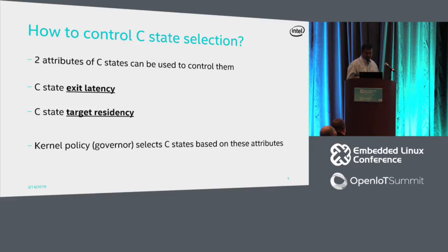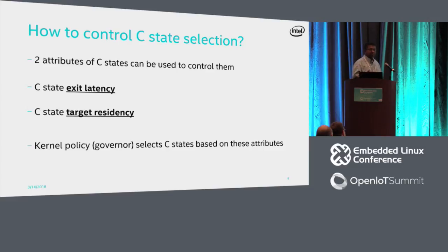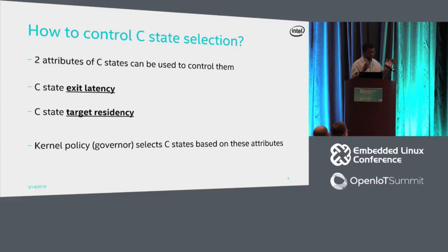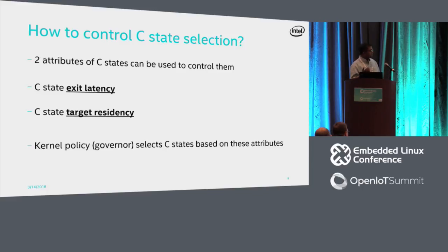To control anything in software, we need some attributes to set conditions and filtering on. C-states have two such attributes: exit latency and target residency. Exit latency is the time taken for the hardware to exit that C-state. Target residency is the minimum idle time needed to justify entering a C-state — because entering and exiting consumes some power, the CPU needs to stay idle long enough to compensate. The kernel policy, called the CPU idle governor, uses these two attributes to select the appropriate C-state for a given idle time.